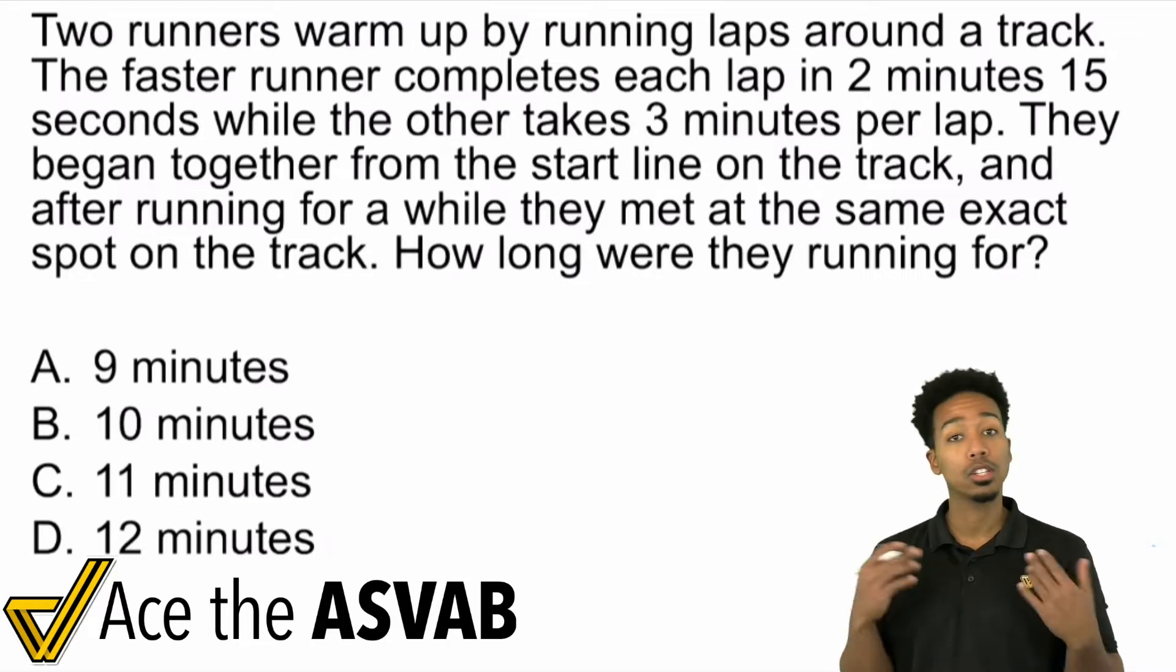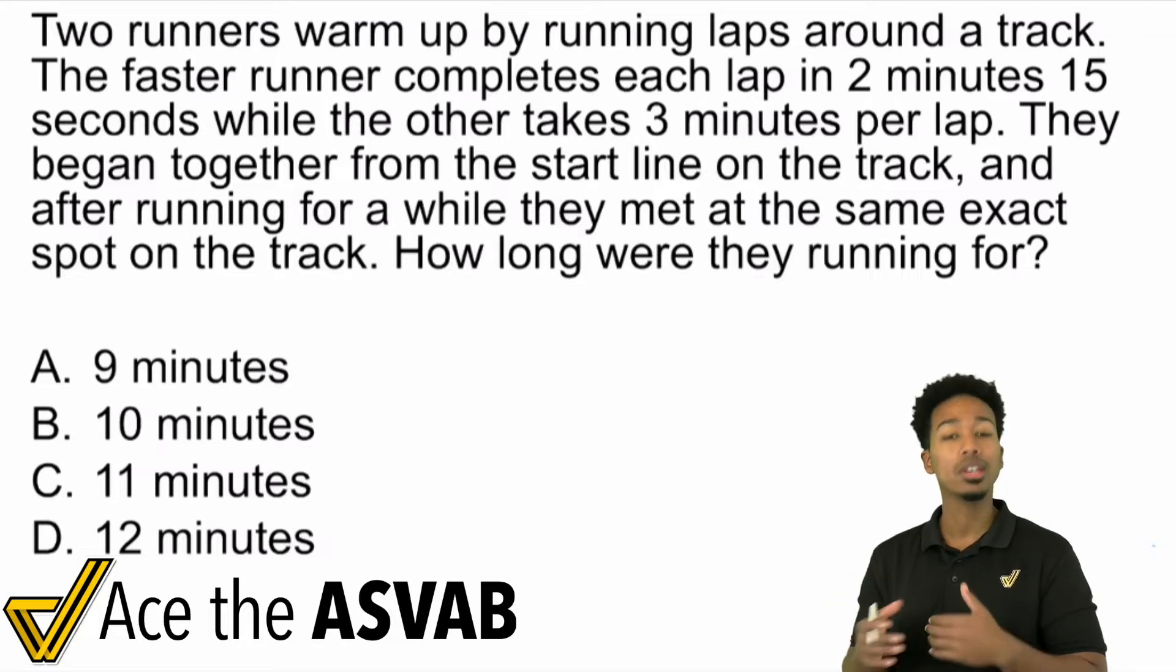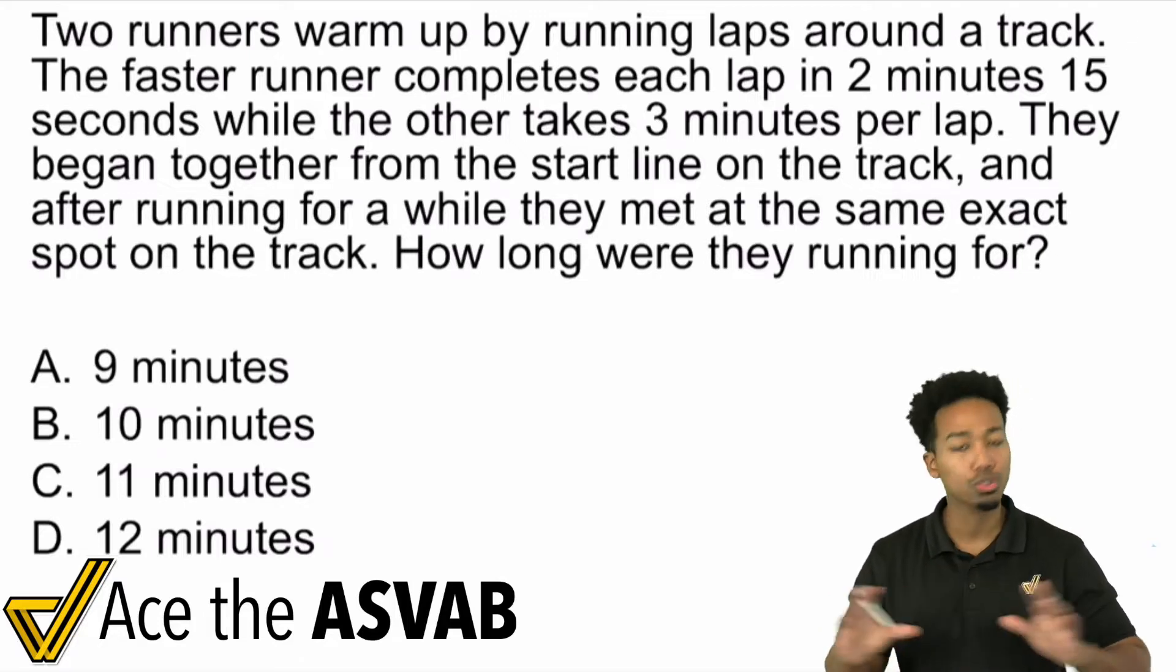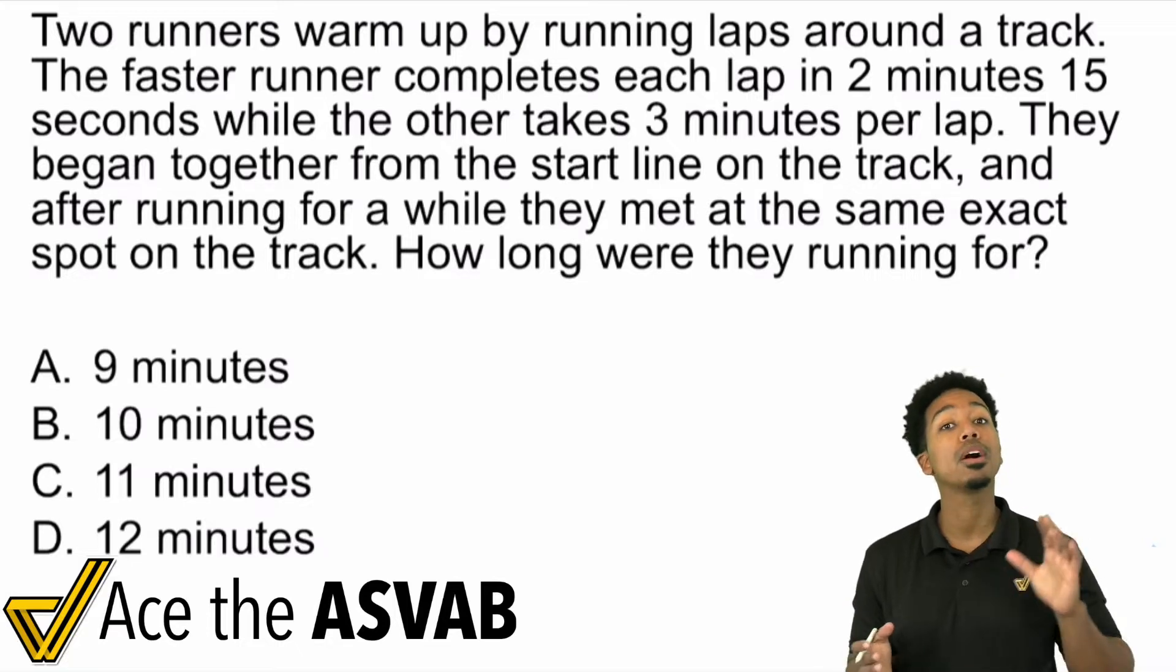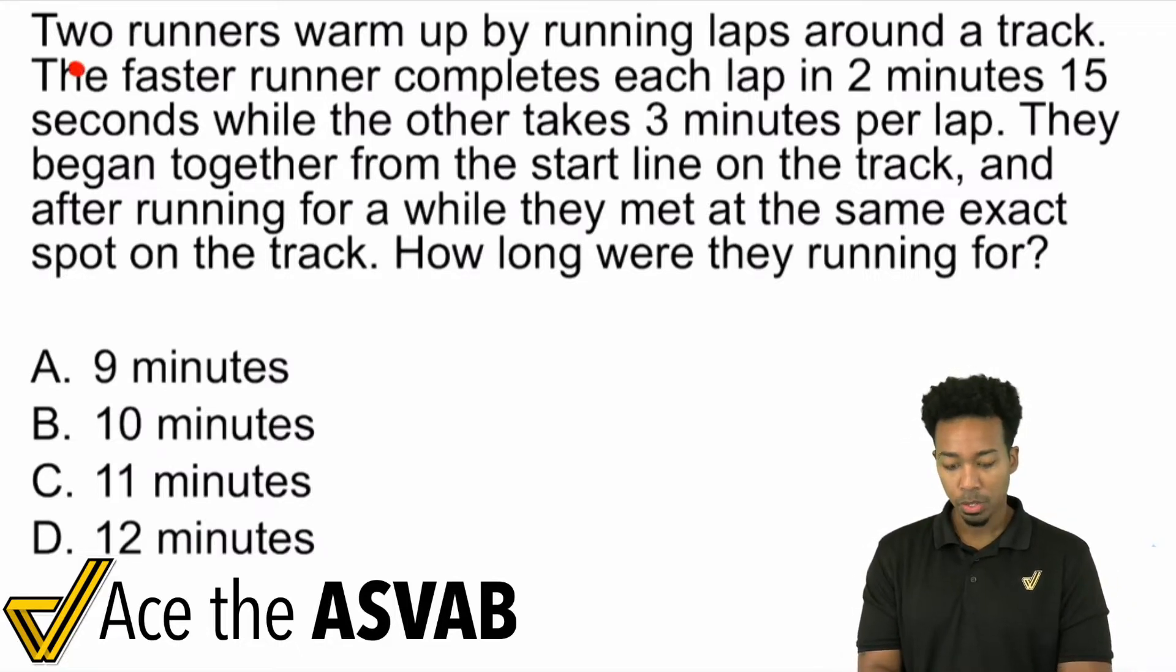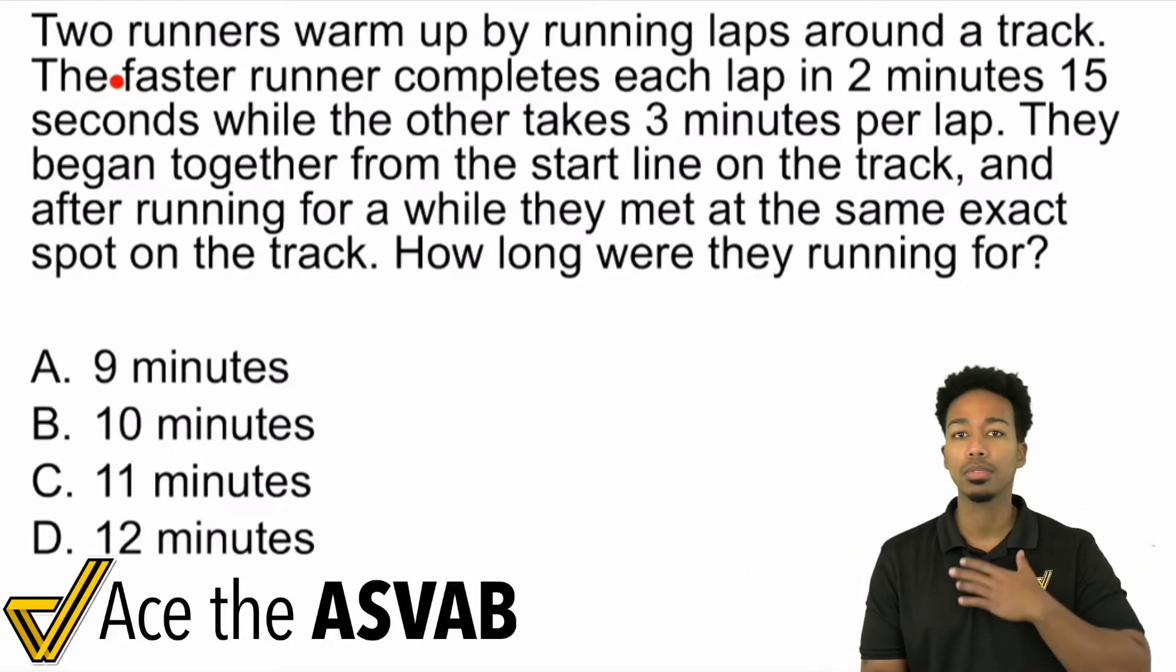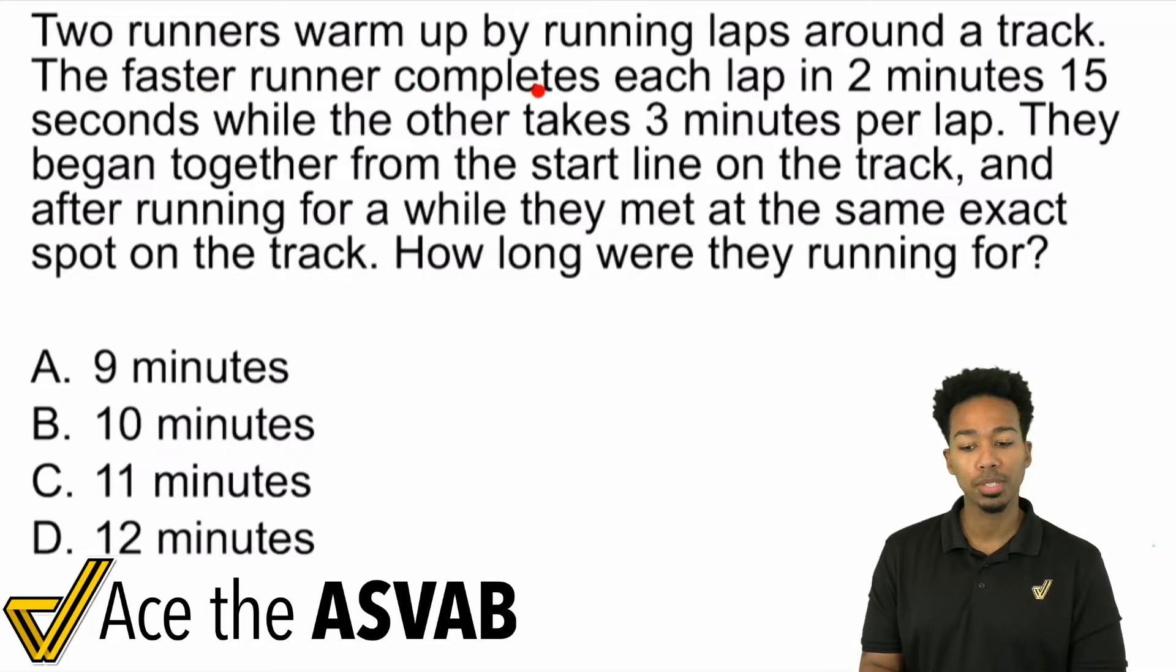Let's understand the situation and what we need to do. You know that I always say read the question first, the sentence question. That way you understand what you're looking for and then you can use the given information to get things done. I'm going to read this like a true story front to back though, because I want you to pay attention to not the numbers, but the story. So two runners warm up by running laps around a track. Can you imagine that? Two people running laps around a track. The faster runner completes each lap in two minutes 15 seconds while the other takes three minutes per lap.